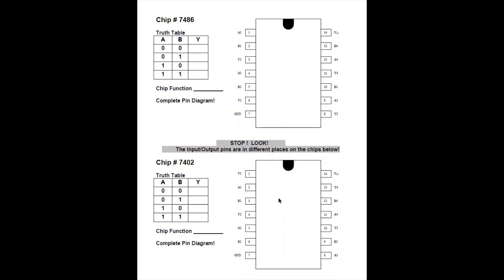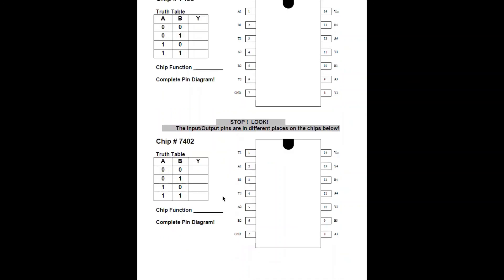And then this one is a little bit different. That's why I wrote stop, look, the input and output pins are different on this chip. The 7402 still has power and ground in the same place, but look, the inputs are now 2 and 3 and the output is 1. So they're arranged a little bit differently. If you don't move your wires from your switches, you're going to get very strange results.